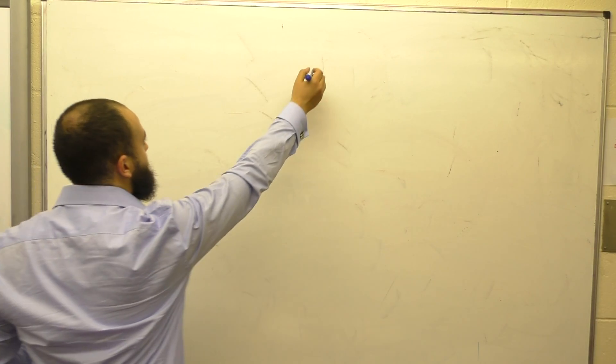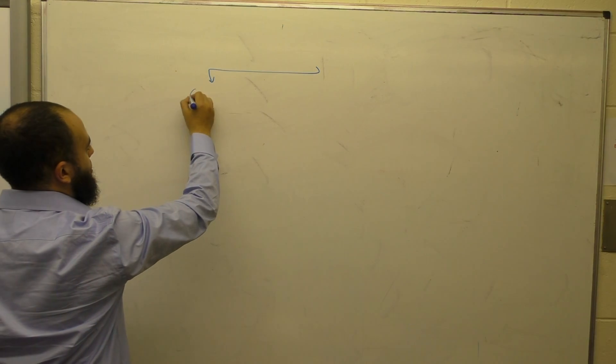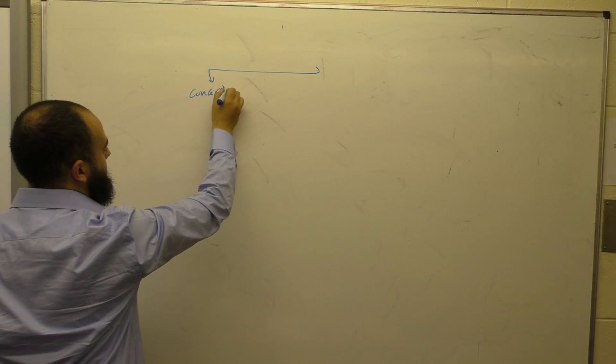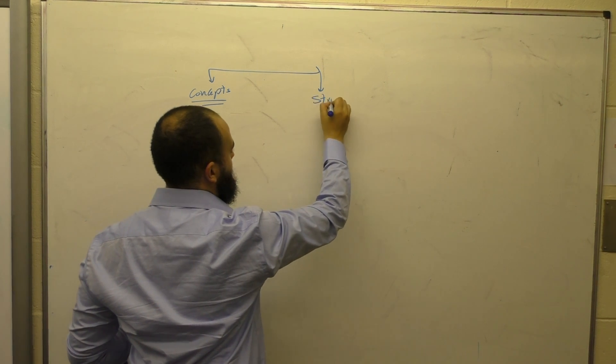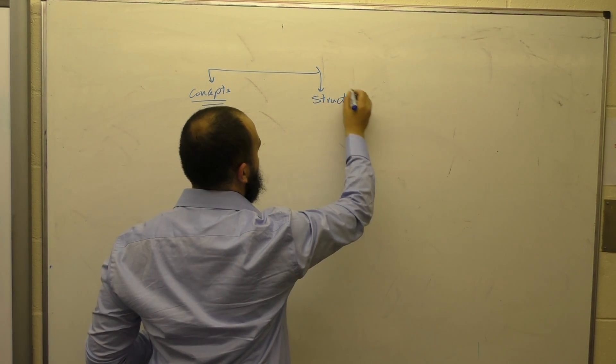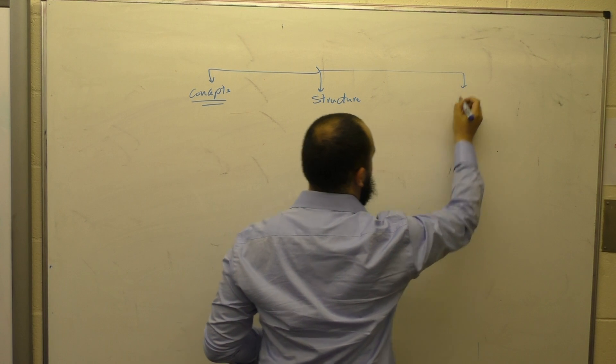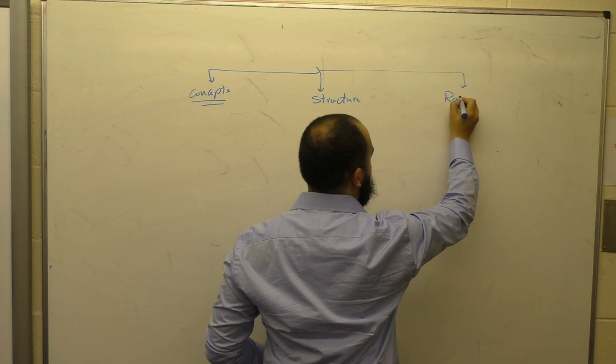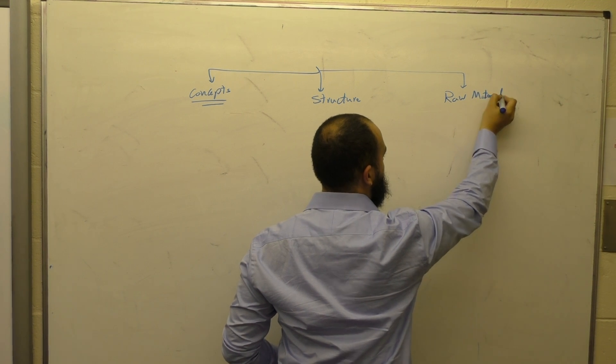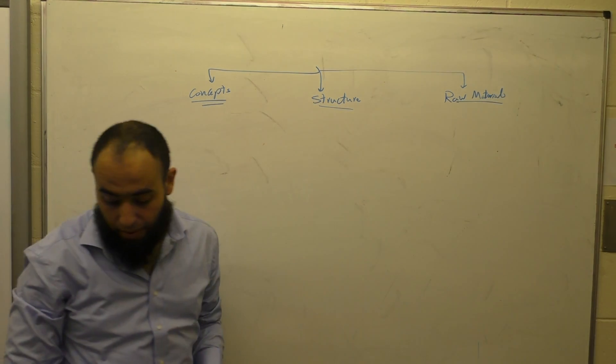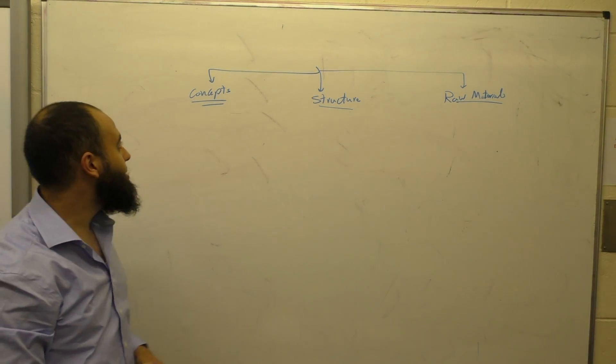The first thing: concepts. The second thing: structure. The third thing: the raw material. These concepts are my concepts in teaching critical writing.